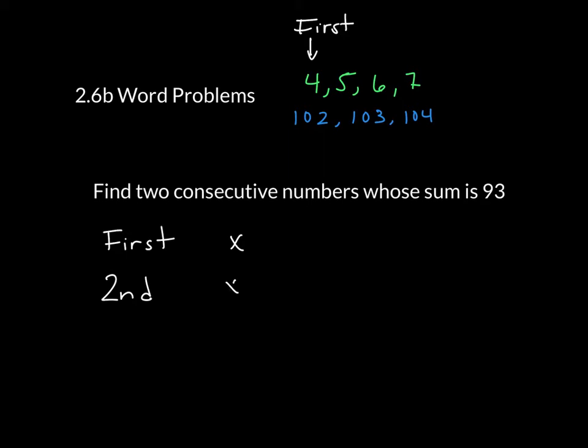the second number would be x plus 1, and a third would be x plus 2, because every time you're going up 1, up 2, up 3. But this doesn't have a third one in this case. We are only using those first two.